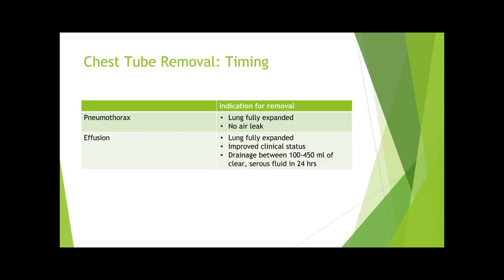The timing of chest tube removal depends on the indication. In the case of pneumothorax, the chest tube can be removed when there is no evidence of an air leak and the lung is fully expanded on chest x-ray — there must be no visible air leak and air must not accumulate when suction is removed. In the case of a pleural effusion, the chest tube can be removed when the lung is fully expanded, the patient's clinical status has improved, and drainage is between 100 to 450 mL of clear serous fluid in 24 hours.